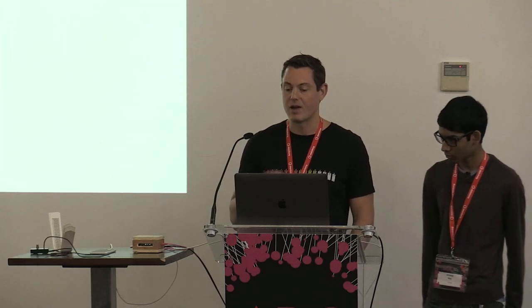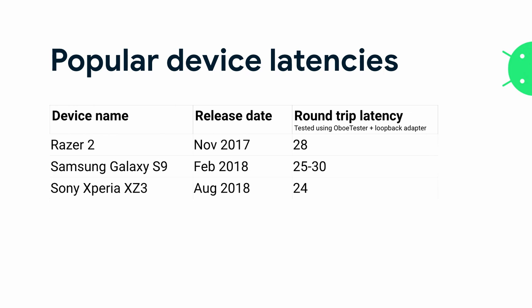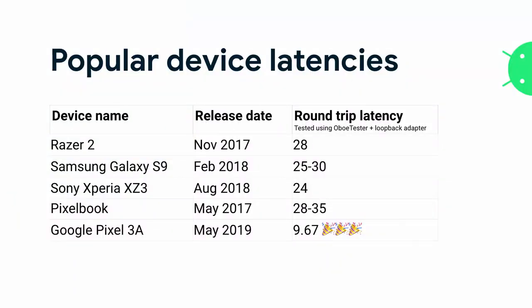To demonstrate this, I grabbed a few devices from around the office to run latency tests. The Razer 2 comes in at 28 milliseconds. The Samsung Galaxy S9, one of the most popular devices ever made, has latency in the 25 to 30 millisecond range. Sony flagships also have excellent audio latency. The Pixelbook, released in 2017, is around 28 to 35 milliseconds. All of these devices are perfectly capable of doing real-time processing for most use cases. Lastly, the Google Pixel 3a — we ran tests yesterday and it's the first Android device I have ever seen to get a sub-10 millisecond round-trip latency, which is extremely exciting.